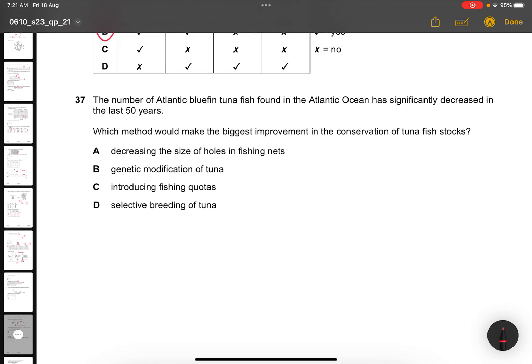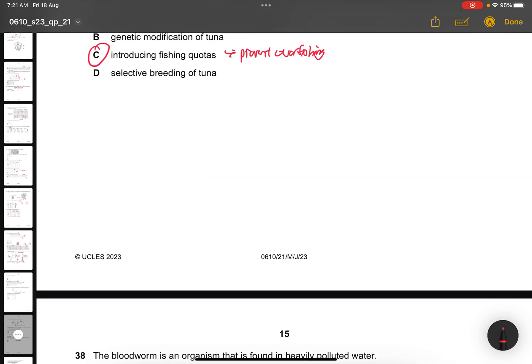Question 37. The number of Atlantic bluefin tuna fish found in the Atlantic Ocean has significantly decreased in the last 50 years. Which method will make the biggest improvement in the conservation of tuna fish stocks? Of course, the method to improve is by introducing fishing quotas. It is to prevent overfishing.